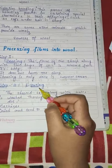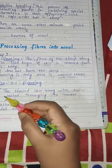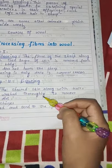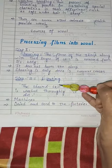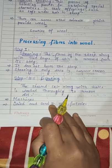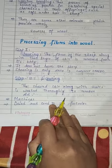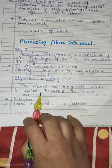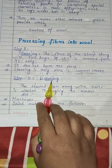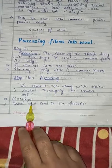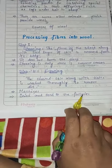Step two is scouring: the sheared skin along with hairs is washed thoroughly to remove dirt. Once shearing is done, the hair contains some grease, dust, and dirt. To remove it, the wool is washed thoroughly in machines — that is called scouring. After washing, it is dried and sent to factories for the next process.